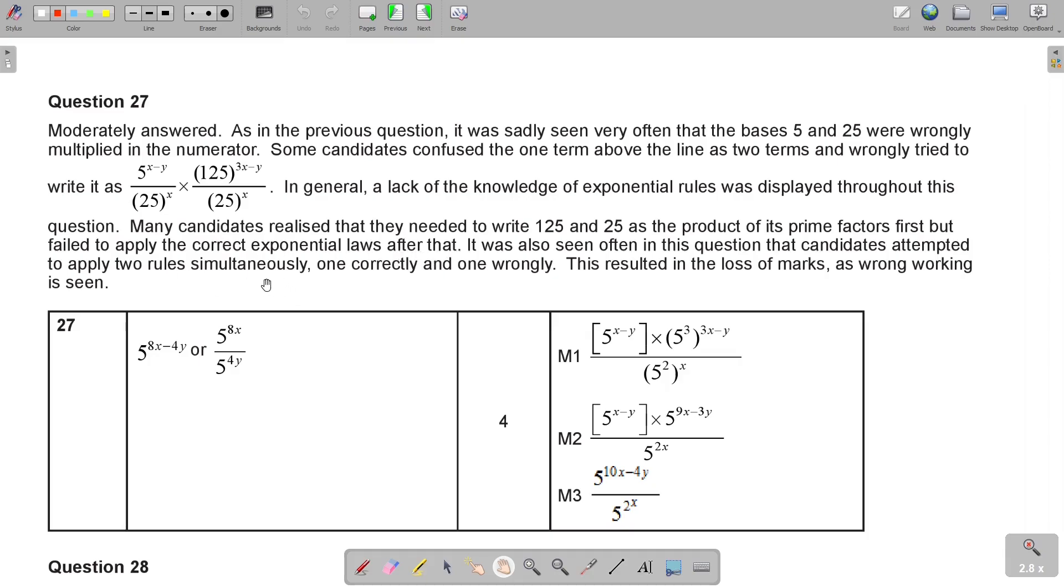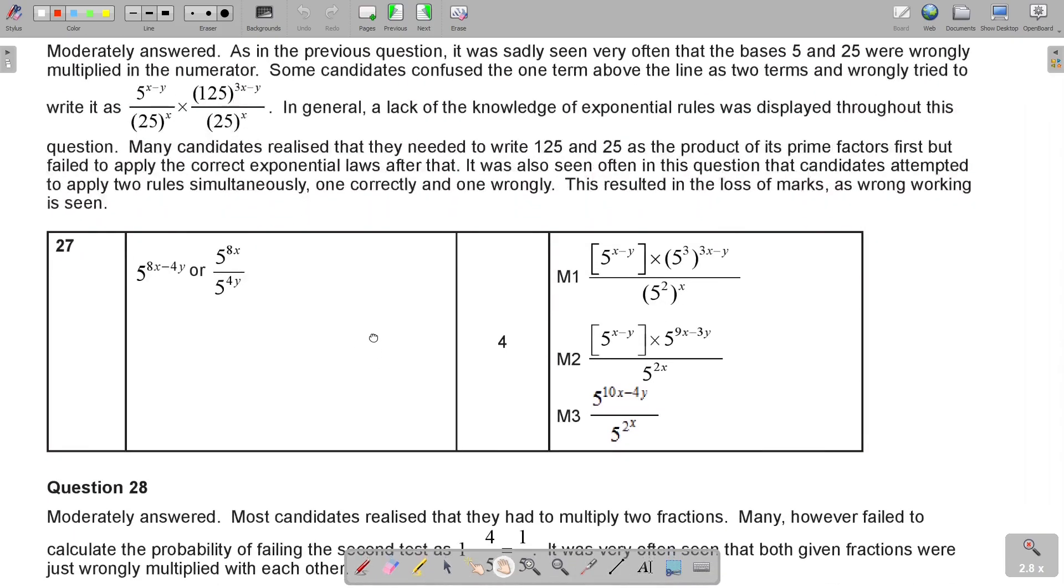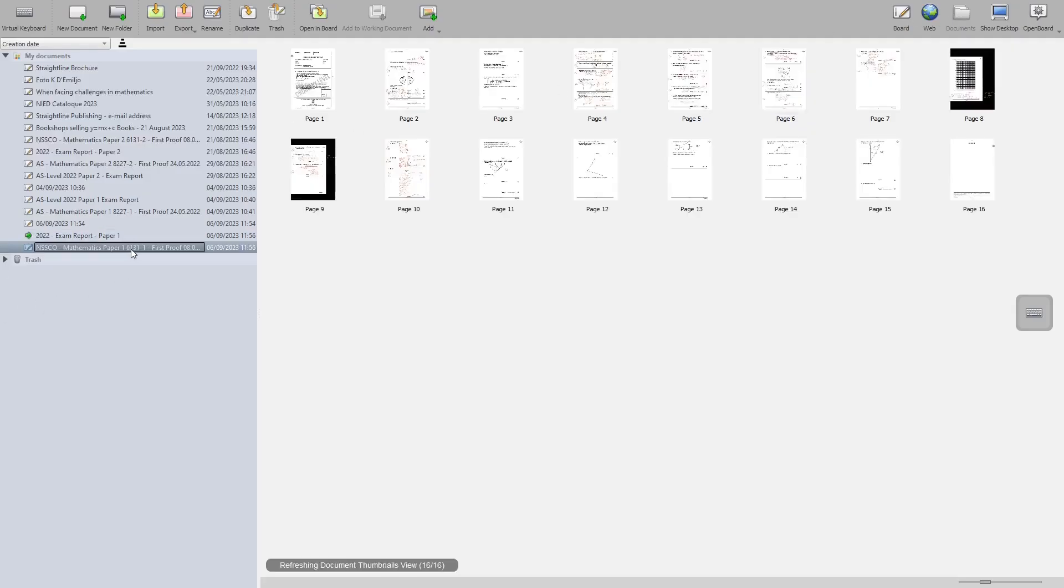Many candidates realized that they needed to write this as the product of its prime factors first. But failed to apply the correct exponential laws after that. So, if it's multiply, you add the exponents if the bases are the same. And if it's divide, if the bases are the same, you subtract the exponents. It was also seen often in the question that candidates attempt to apply two rules simultaneously. One correctly and one wrongly. This result in the loss of marks is wrong working. So, you can either write it like this, as I did. Or you can split it up and bring it down. Which I think would have been a little bit more challenging. But this was 100% correct.